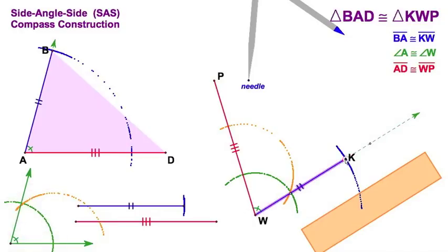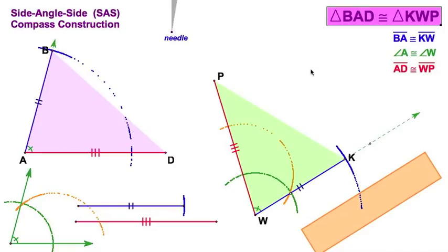I draw in WK, and I've created a triangle. And what I've got now is triangle BAD congruent to triangle KWP. And you can see that these two triangles are reflected and rotated. So that's the relationship between the two. Wow! That was a lot of work, and we've got another one to do and we'll call it good.